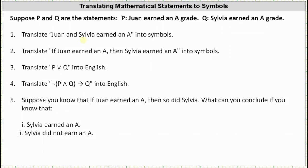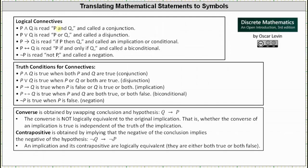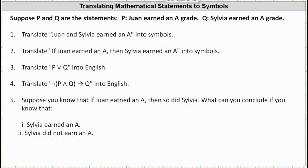Let's quickly review the common logical connectives. At the top, we have the symbols for P and Q, then the symbols for P or Q, then the symbols for if P then Q. Next we have the symbols for P if and only if Q, and finally the symbol for the negation of P, or not P. Going back to our first example, to translate 'Juan and Sylvia earned an A,' because of the 'and,' we want the symbols for P and Q, which would be these symbols here.